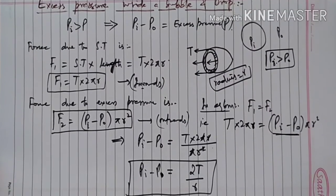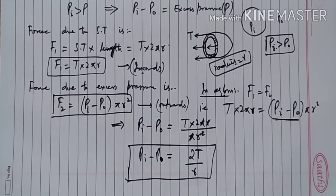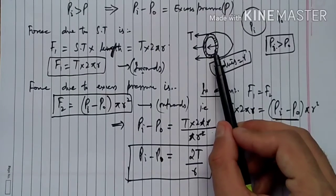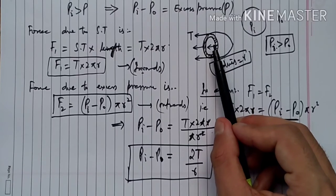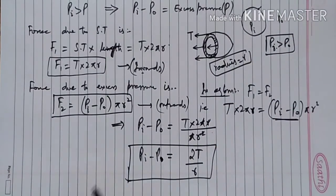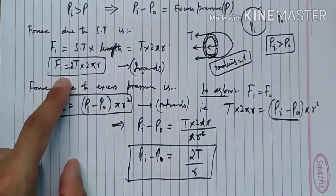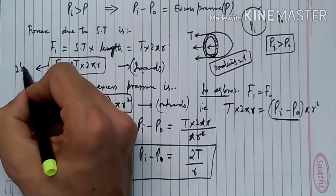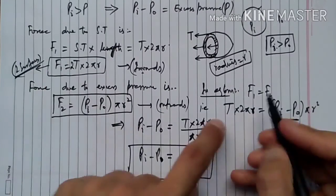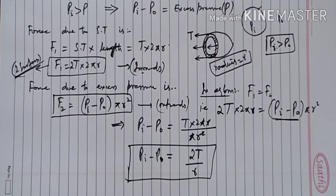Here we have a mistake — a miscalculation. In the case of a soap bubble, there are two surfaces: one inside and one outside. So the force due to surface tension must be multiplied by two. Because the bubble has two surfaces, we multiply by 2, giving us 4T/R.